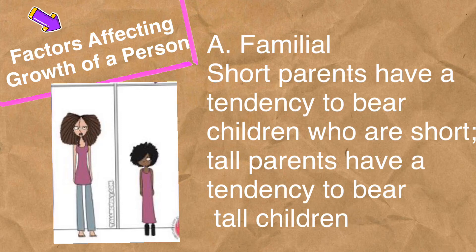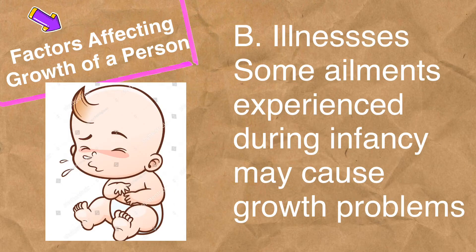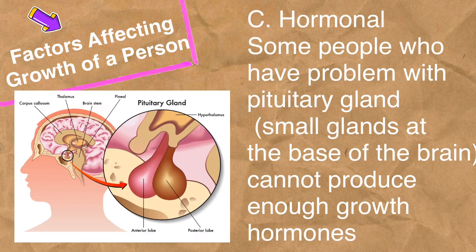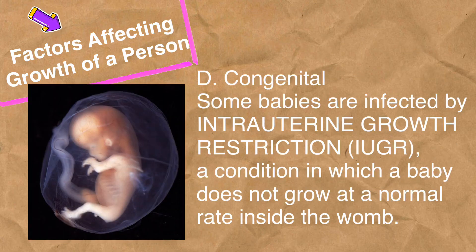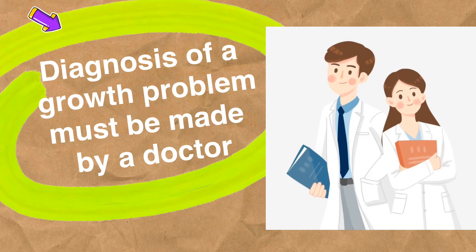Factors affecting growth of a person: First, familial — short parents tend to bear children who are short, and tall parents tend to bear tall children. Next, illnesses — some ailments experienced during infancy may cause growth problems. Next, hormonal — some people who have problems with the pituitary gland, the small gland at the base of the brain, cannot produce enough growth hormones. Lastly, congenital — some babies are affected by intrauterine growth restriction or IUGR, a condition in which a baby does not grow at a normal rate inside the womb.